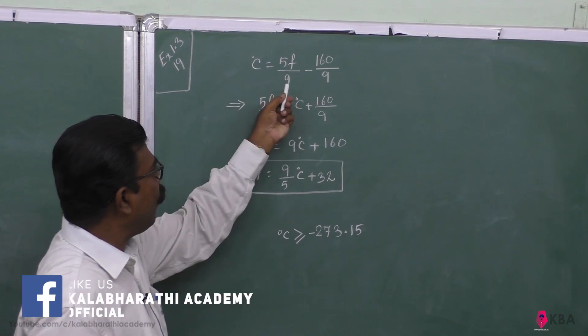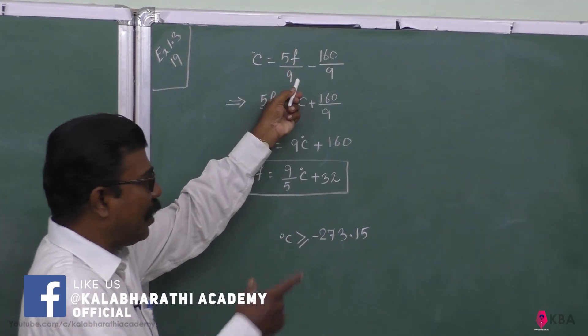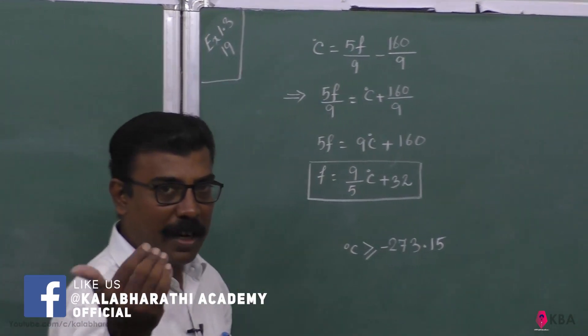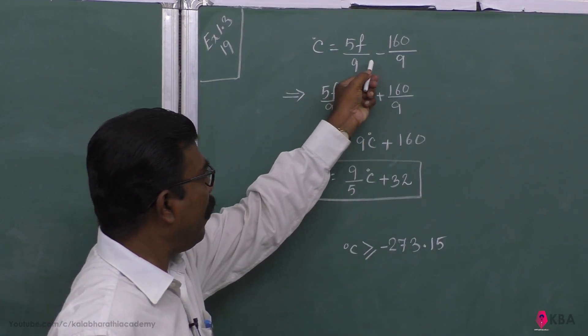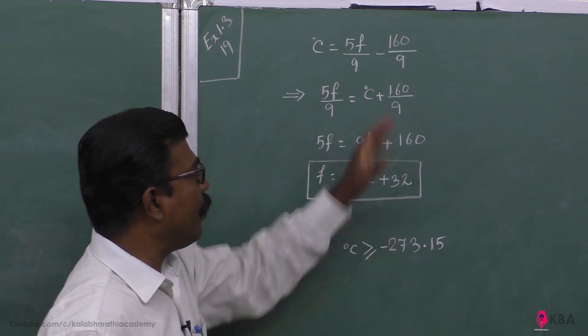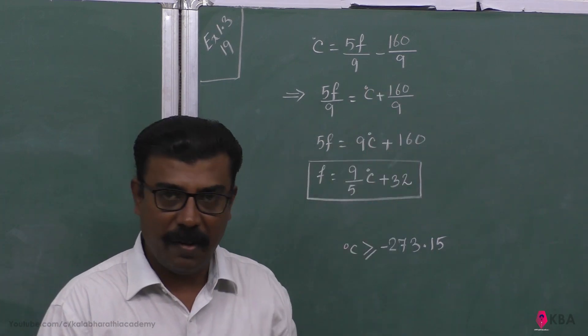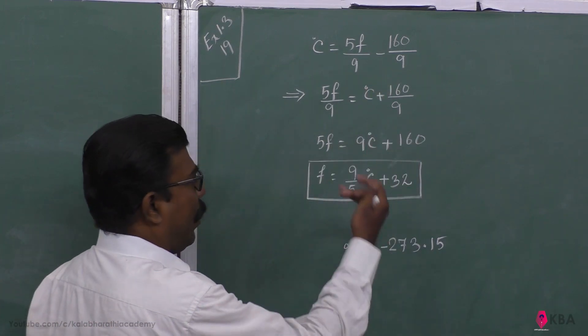Degree centigrade is equal to 5F divided by 9 minus 160 divided by 9. We have written. Inverse function we have written.